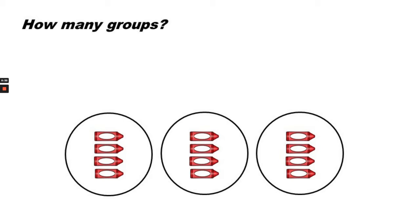How many groups do you see? One, two, three. Three groups. How many crayons are in each group? One, two, three, four. Four crayons in each group.